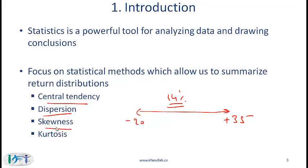Skewness describes whether the data is skewed to the right, skewed to the left, or whether it is normal — meaning there is no skewness on either side. Kurtosis is a slightly more difficult concept that we will discuss towards the end of this reading.